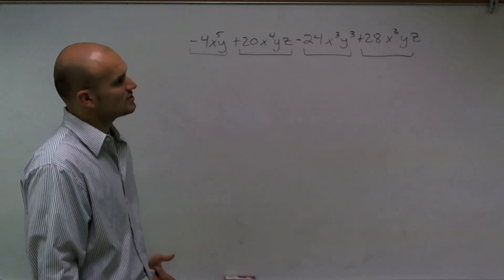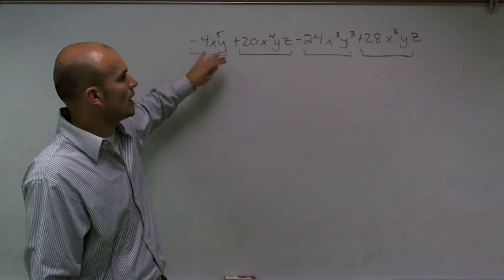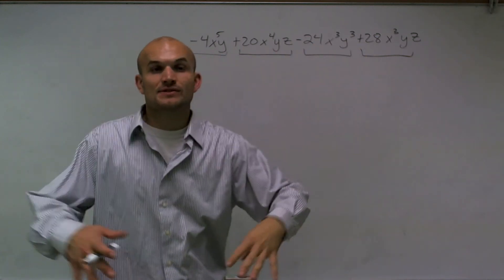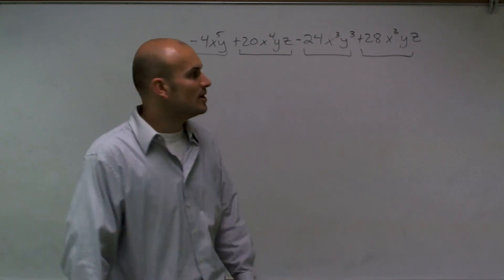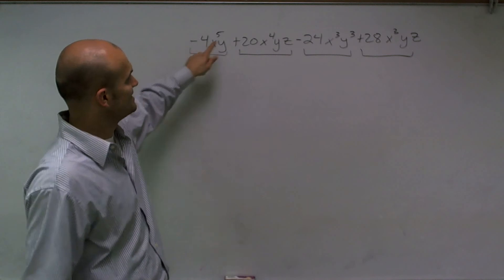So first we always like to look at the numbers and say, all right, what is the largest number that all three of my monomials share? And I notice that they're even, so we obviously know that two is going to work, but we want to look at the greatest number. What is the largest number that divides into all of them?